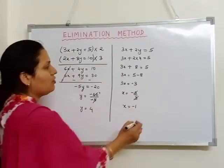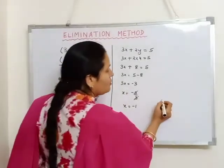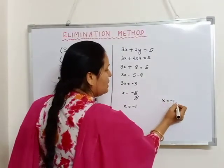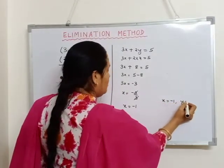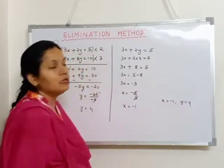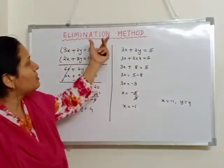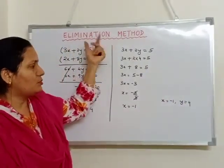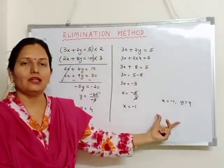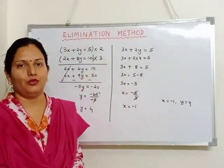In this way, we got the values of x and y — that means x equals to minus 1 and y equals to 4. By this method, the elimination method, I have found out the values of x and y.